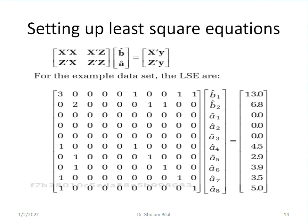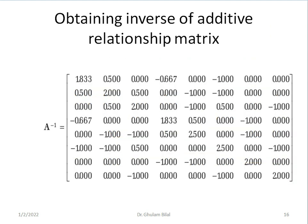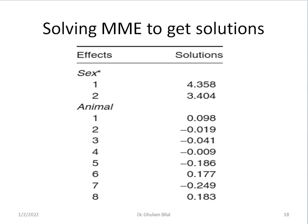Then matrix of observations. Now we set up equations, least square equations. Then we set up additive genetic relationship matrix. We take its inverse and build MME, write MME and get solutions. Males have higher weaning weight than females, which is 3.4. And we have breeding values of all animals.